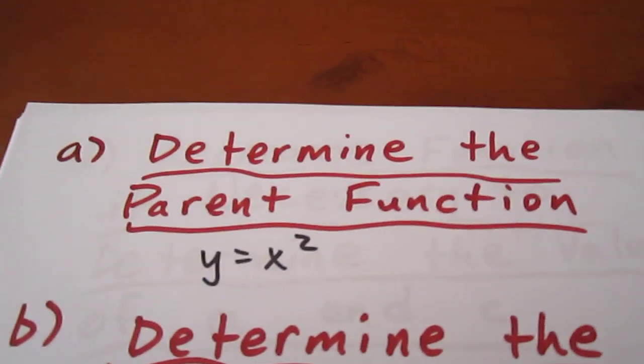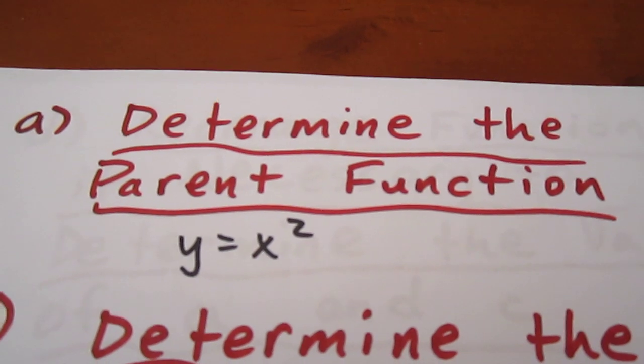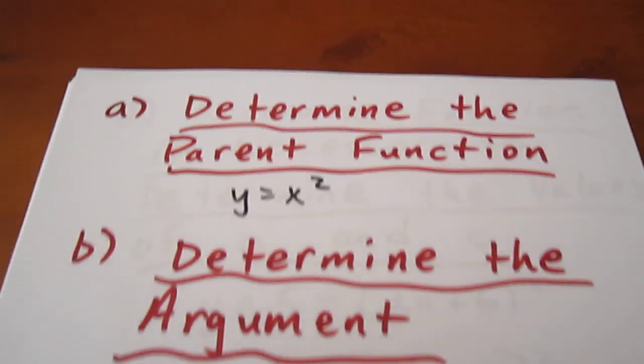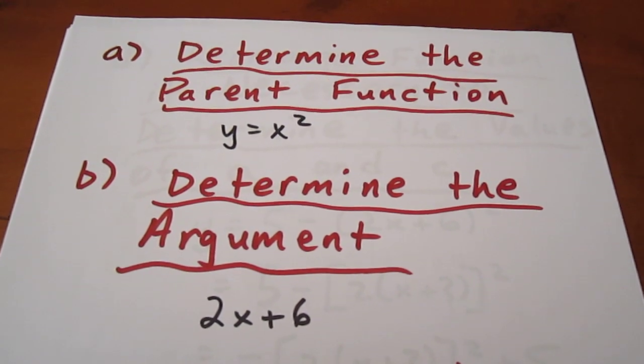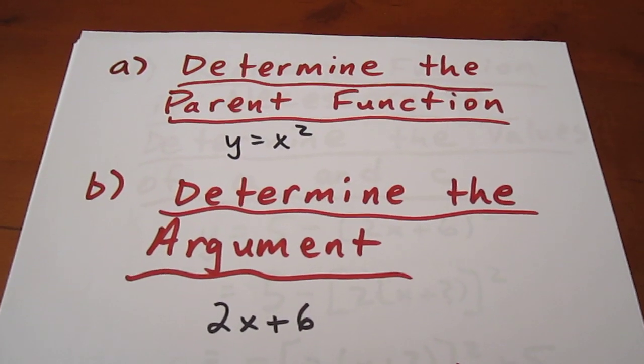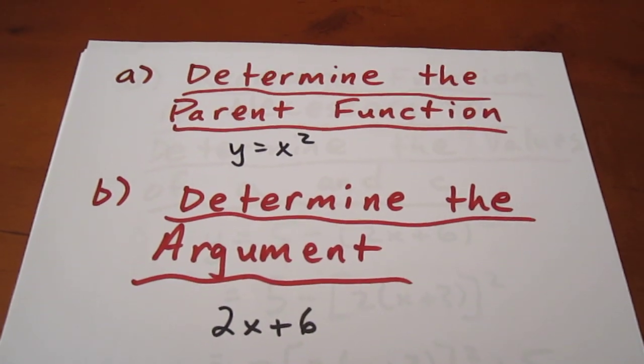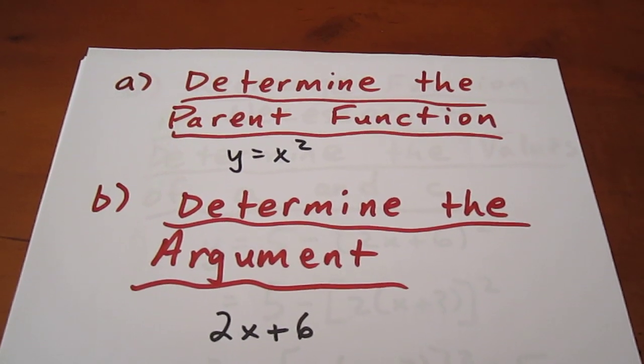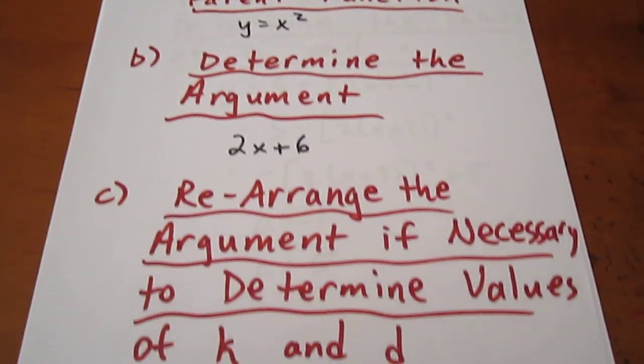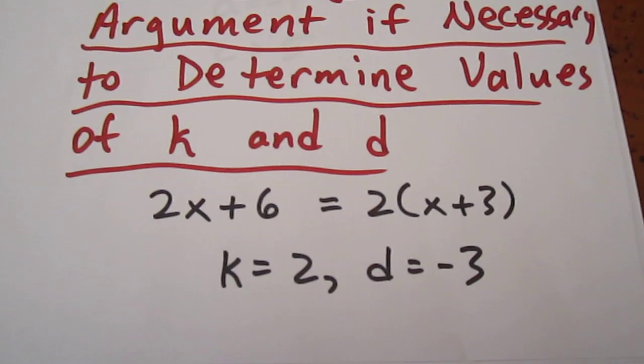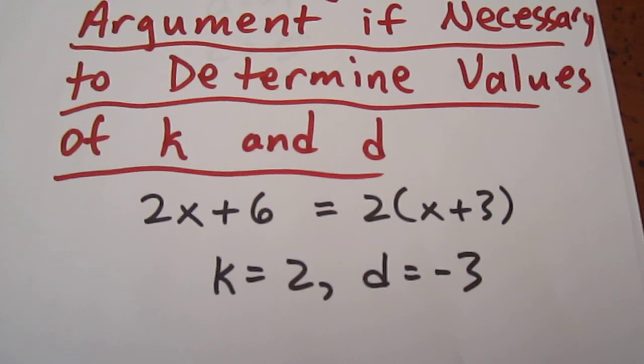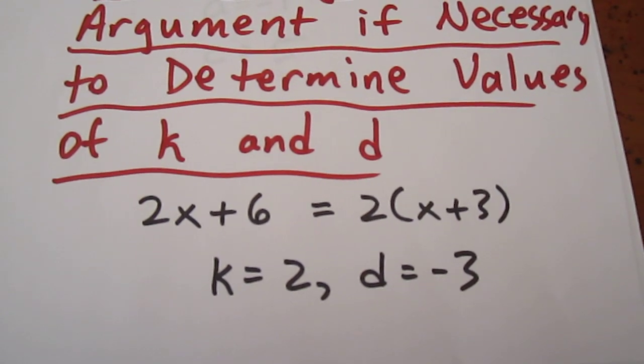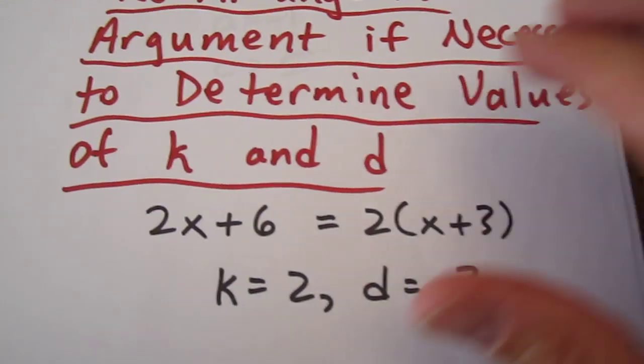So first things first, the parent function in this case is y equals x squared. The argument is 2x plus 6. That's the quantity being squared. What we'd like to do is factor out the leading coefficient and determine the k and the d values. So 2x plus 6 is the same as 2 bracket x plus 3, which means our k value is 2 and our d value is negative 3, because it's always k bracket x minus d.